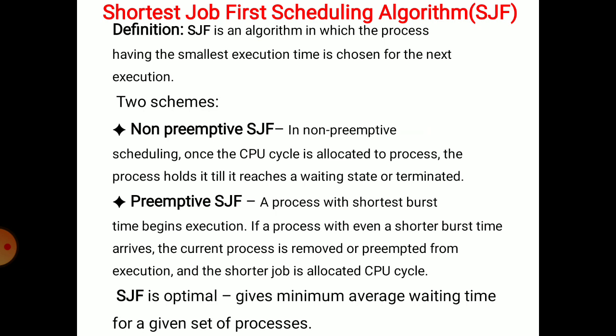SJF exists with two different schemes. The first one is non-preemptive SJF. In non-preemptive scheduling, once the CPU cycle is allocated to a process, the process holds it till it reaches a waiting state or is terminated. That means once you allocate the CPU to a process, it acquires the CPU until its entire completion or voluntarily releases the CPU.